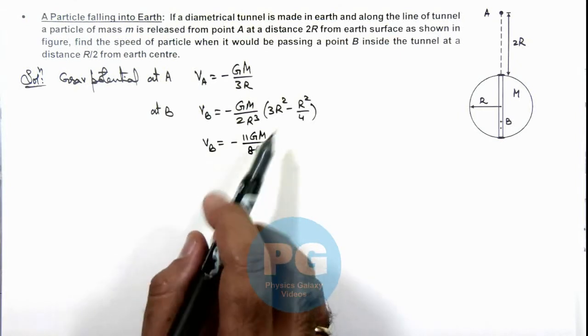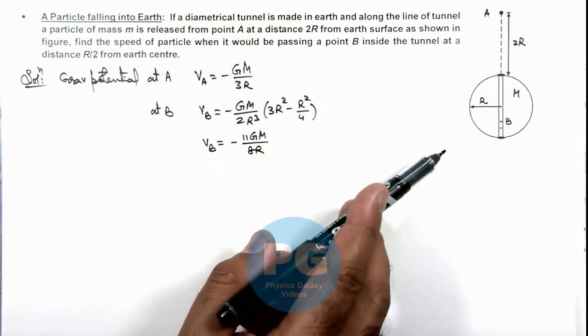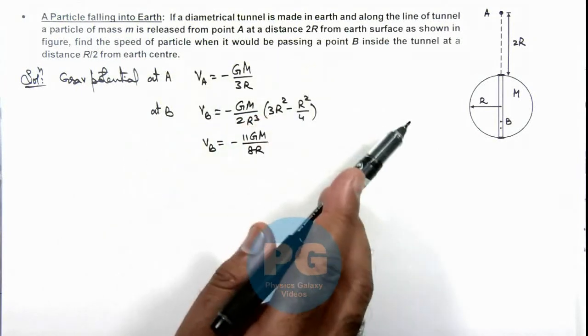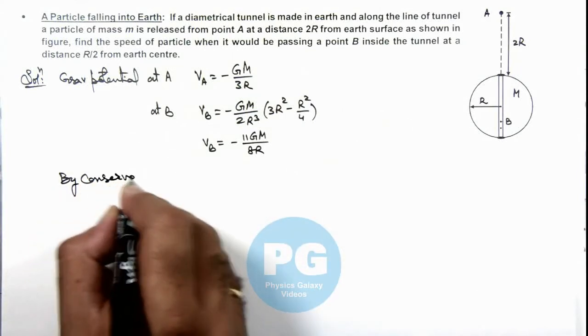Now as body is starting from point A and finally reaching the point B, we are required to find the speed when it would be passing through point B. So we can write by conservation of energy.